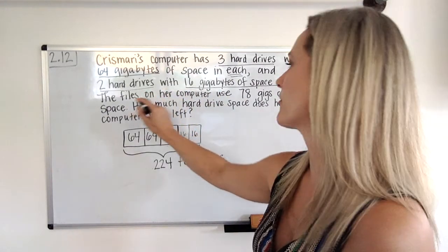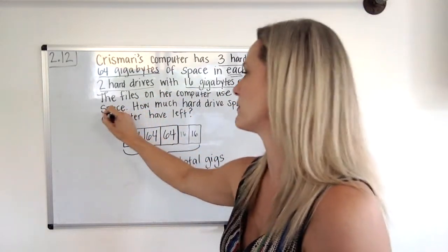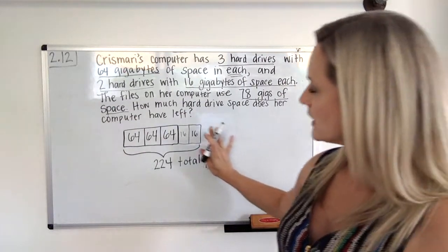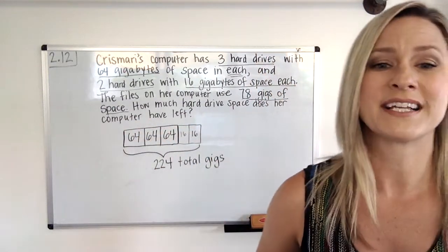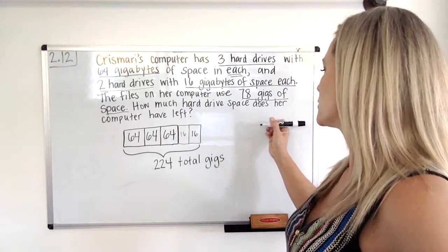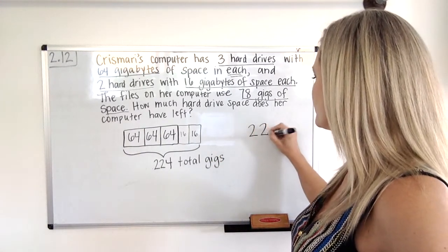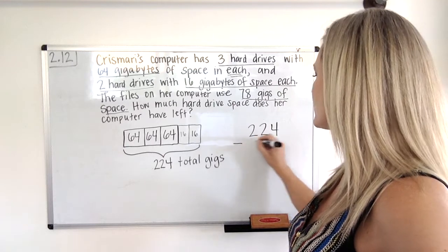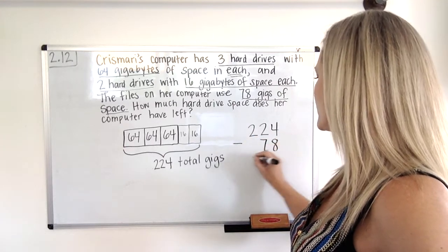So her files on her computer use 78 gigs of space. So in this 224, 78 of it is used up. So 224 minus 78 gigs that are used up.